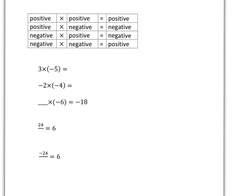So then we can apply it. If we've got 3 times negative 5, we're dealing with positive times negative. We know our answer must be negative, and we know our times tables, so 3 times 5 is 15, making it negative 15. Next one, negative times negative. We know the answer is positive. 2 times 4 gives 8, and we make it a positive answer, so it's positive 8.